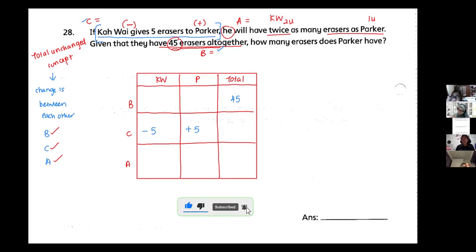I want to know the after. After Kawai, if you look there, after Kawai is two units, so you put that two units. After Paka is one unit. So I know that for Total Unchanged Concept, the change is between one another.